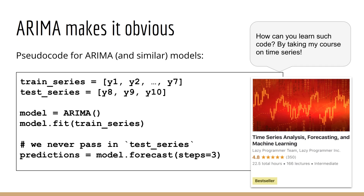One way to see how true forecasts can be made is to use models like ARIMA, which force you to split the data correctly. Since these are not generic machine learning models, there's no need to convert your time series into a table of inputs and targets. Instead, we simply pass in our time series directly, since ARIMA and other models like it are purpose-built for univariate time series. In our simple example, everything up to y7 belongs to the train set and y8, y9, and y10 belong to the test set. We pass y1 through y7 into the fit method, but when it comes time to forecast, we do not pass in any data — we simply tell the model how many steps to forecast, in this case three steps. Thus, the model never gets to see any data beyond y7. This is a true forecast, because the model has to predict multiple steps ahead without peeking into the future.